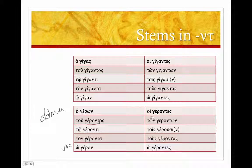And then we have hoi gerontes, ton geronten. And then our dative plural, tois gerusi. Here it's very obvious to see what's happened. The nu tau has dropped out. And we've lengthened that omicron.